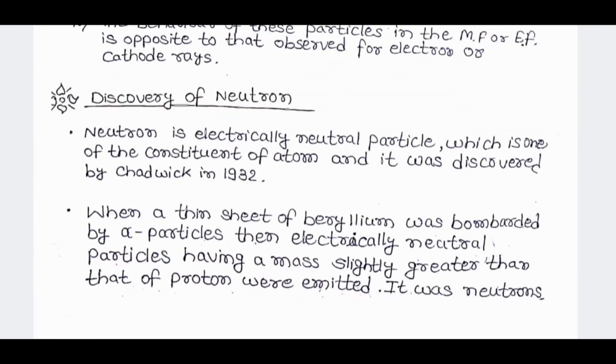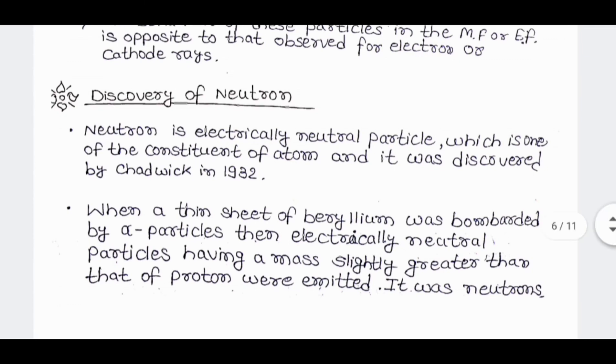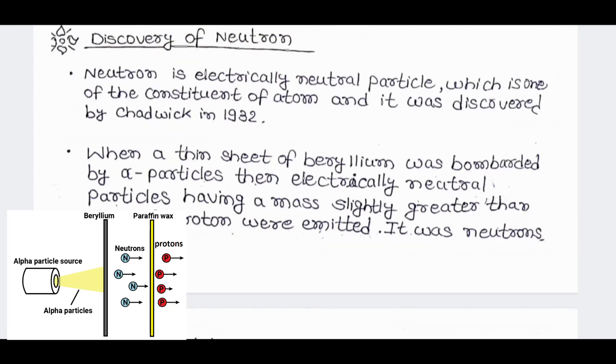Discovery of neutron: Neutron is an electrically neutral particle which is one of the constituents of atom and it was discovered by Chadwick in 1932. When thin sheet of beryllium was bombarded with alpha particles, then electrically neutral particles having mass slightly greater than that of proton was emitted and it was neutron.